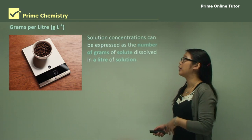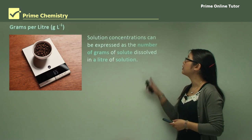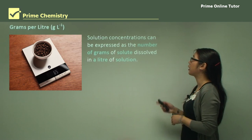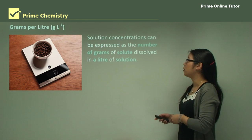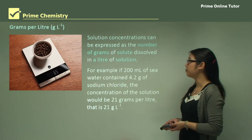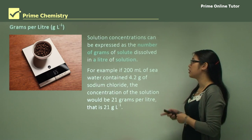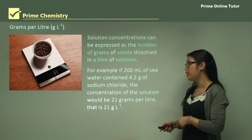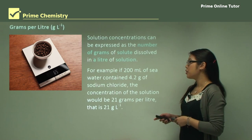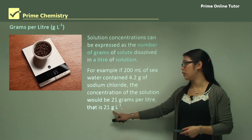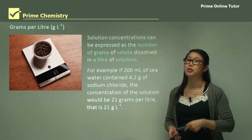One of them can be grams per liter, denoted as G over L. This is a concentration expressed as the number of grams of solute — that's what we're dissolving — dissolved in one liter of solution. For example, if we had 200 mils of seawater containing 4.2 grams of sodium chloride, the concentration would be 21 grams per liter. So this is different from molarity.